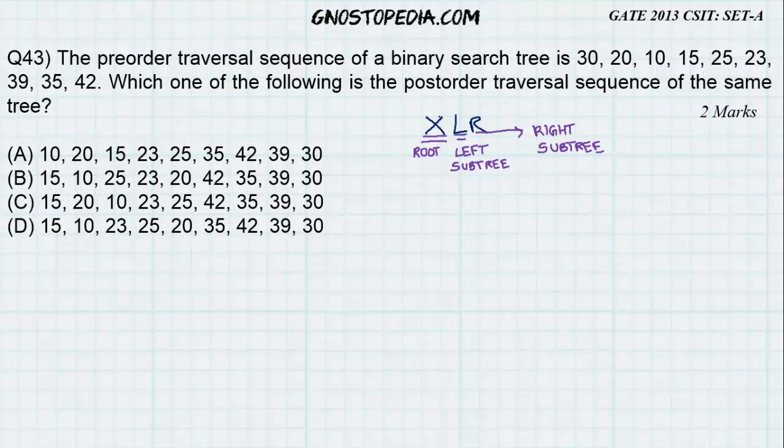Since the root always comes in the beginning, we know for a fact that in this sequence, 30 is the root, followed by the left subtree and the right subtree.